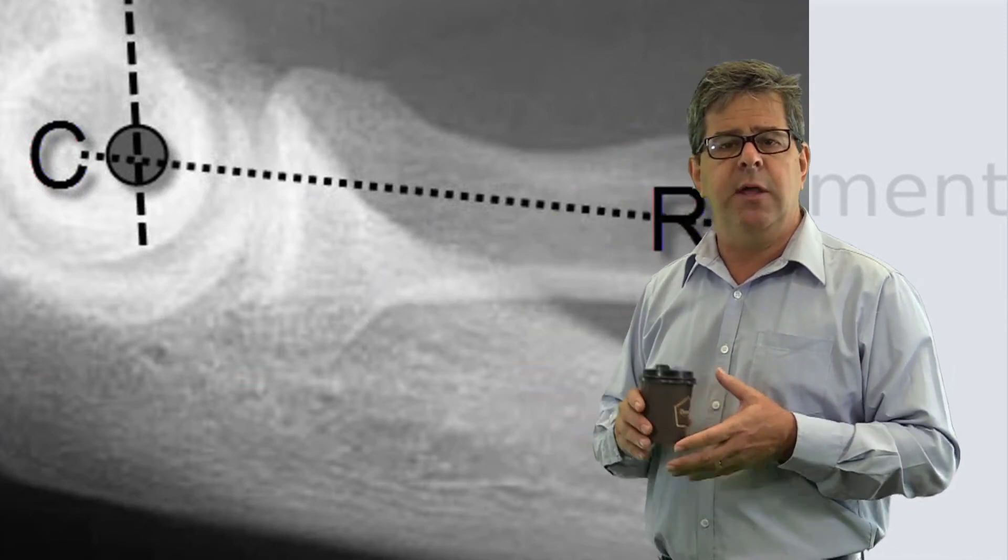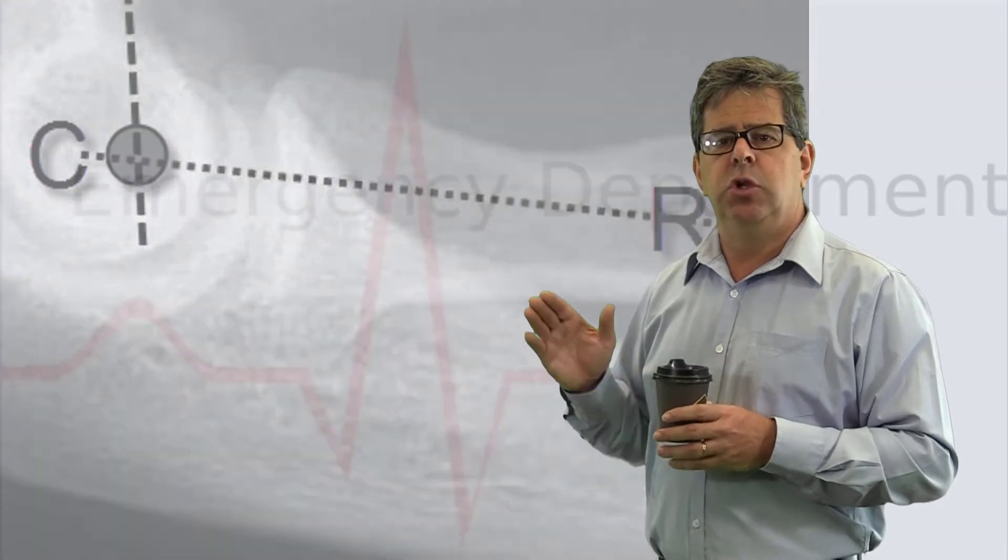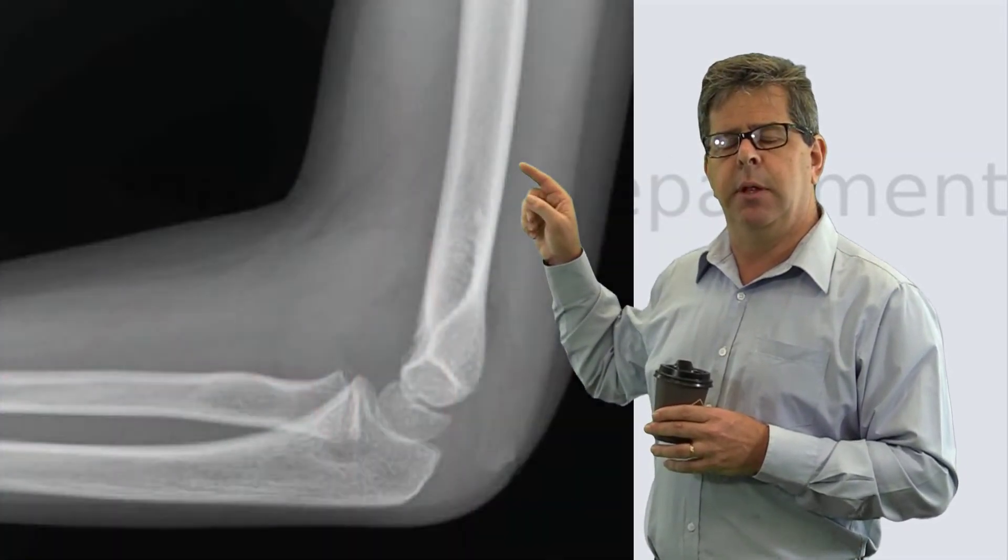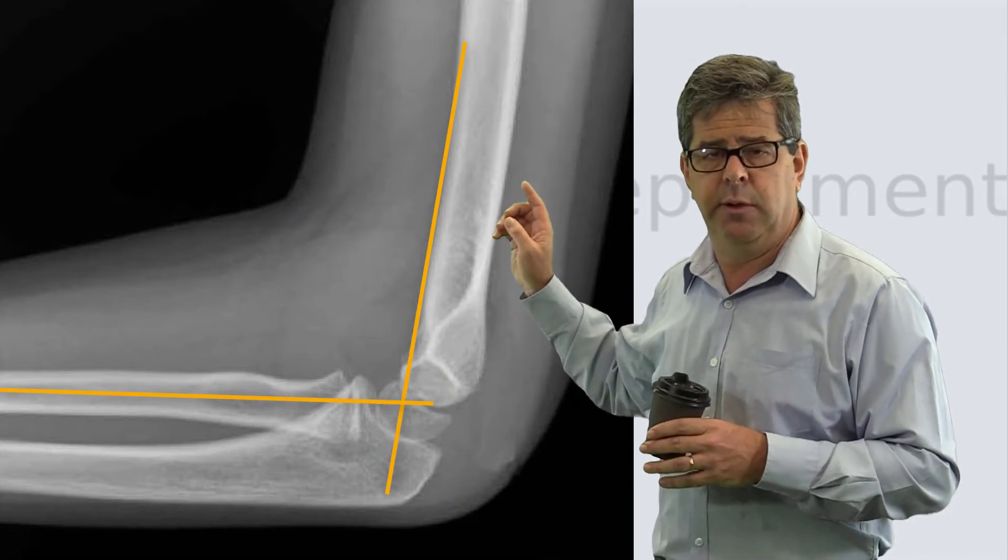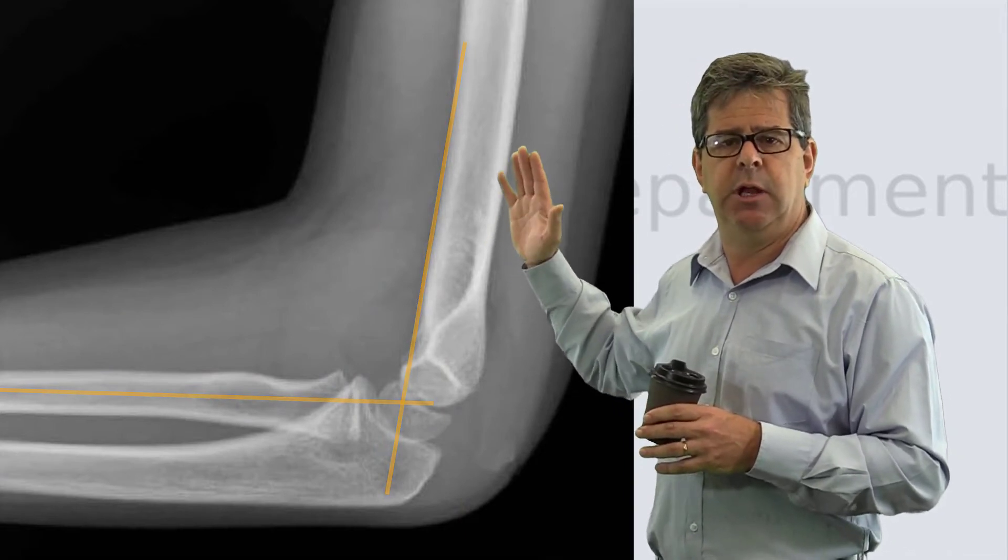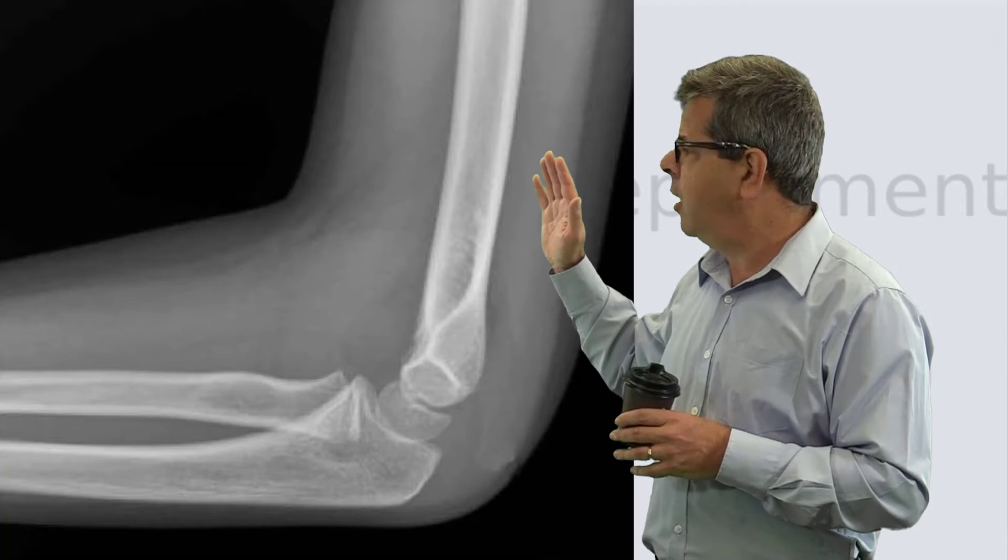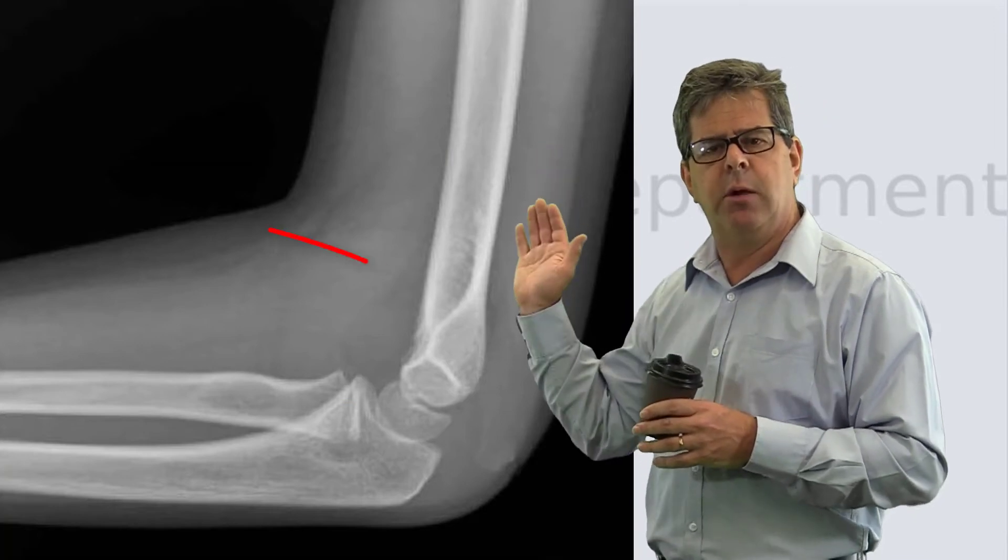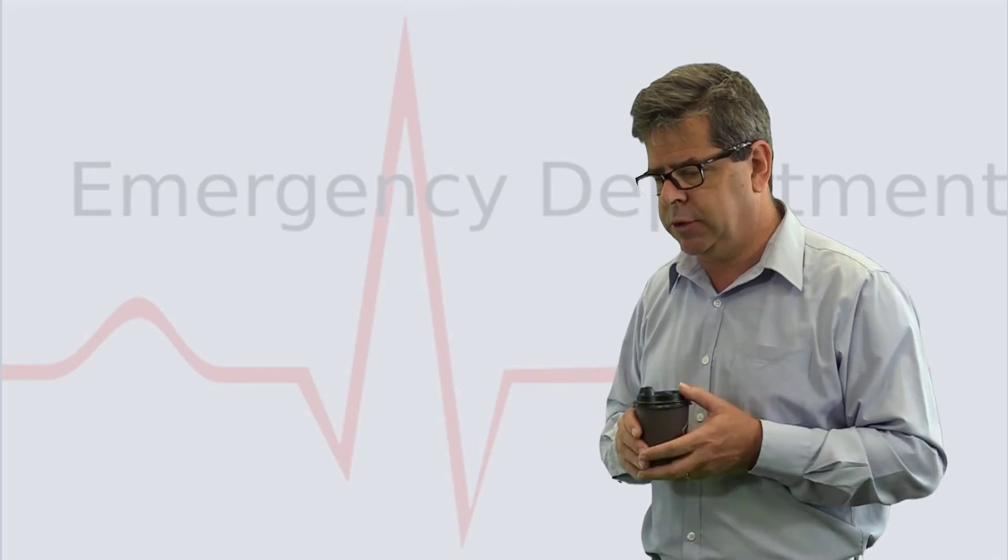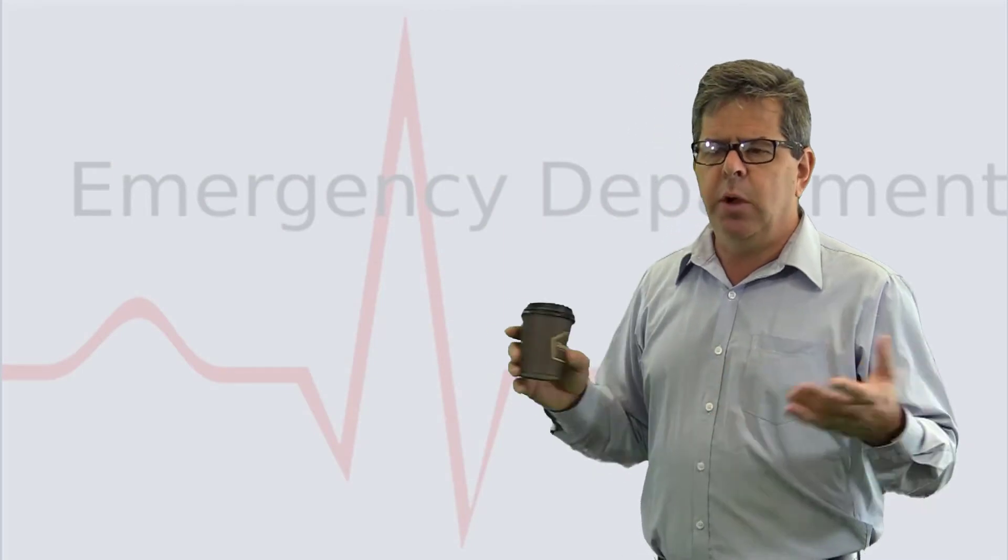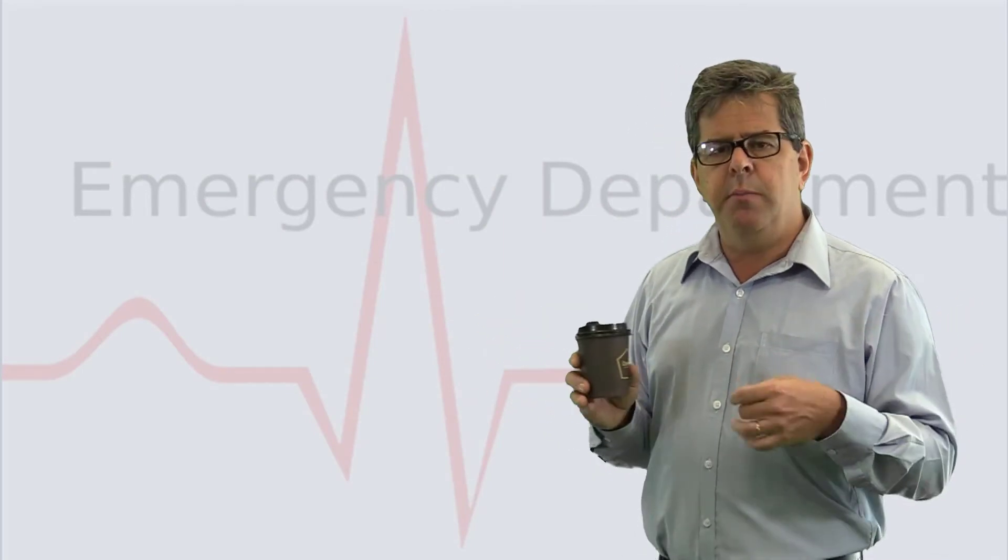If that cross is in the anterior third or even further forward in the capitellum, it means that distal part of the humerus has gone backwards. There's been a fracture and it's been a displaced fracture.